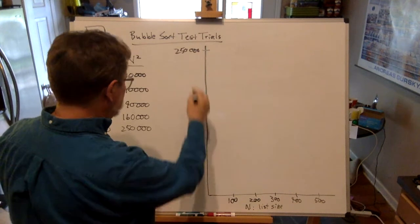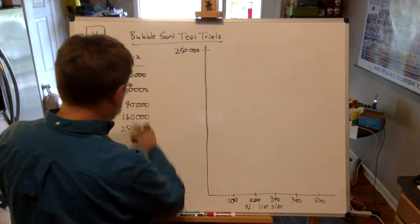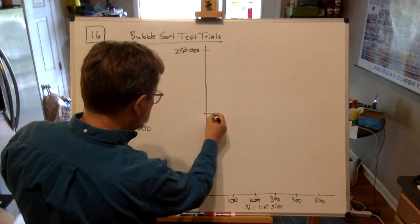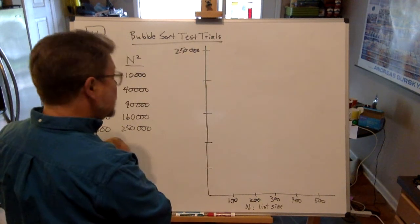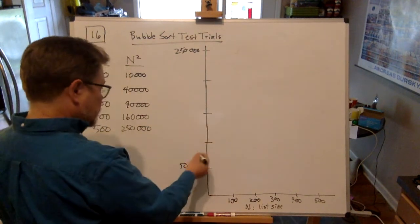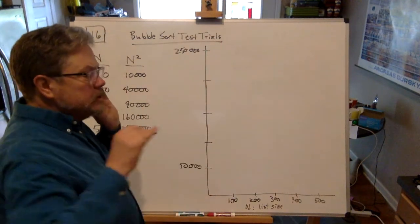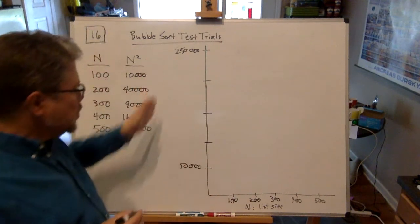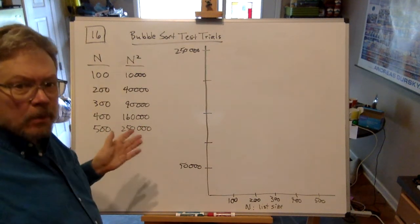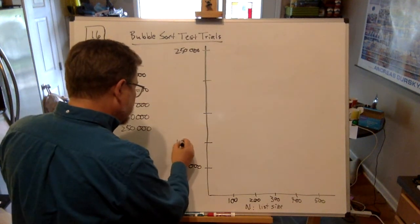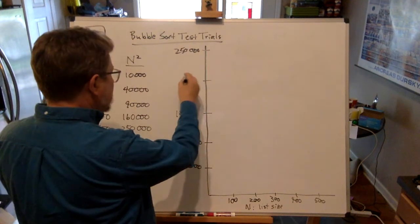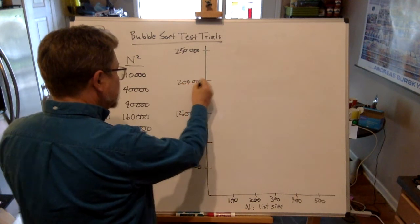Way up here at the top I'll put 250,000. I'm leaving the commas out for a reason. Somehow I've got to divide this into five chunks as well for a linear scale here: one, two, three, four, five. If that's 250,000, then this must be 50,000 down here, working up in increments of 50,000. So I've got 50,000, 100,000, 150,000, and 200,000. That's a linear scale.